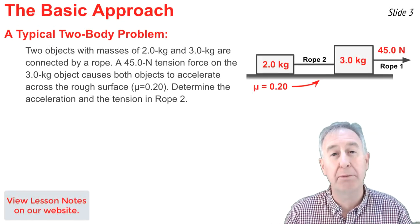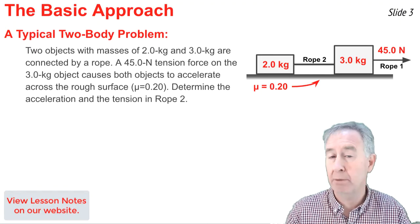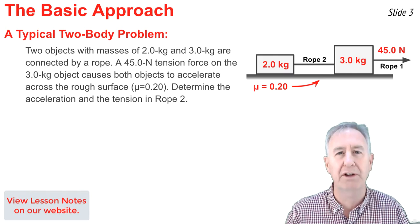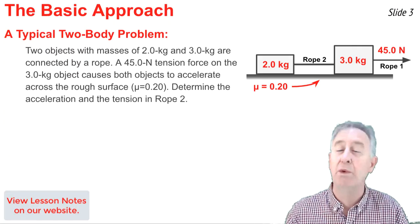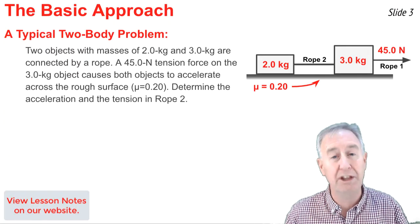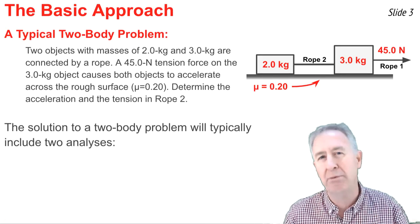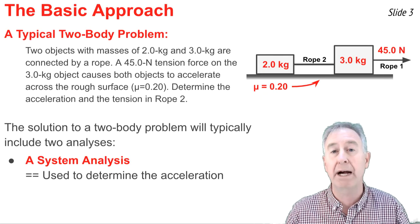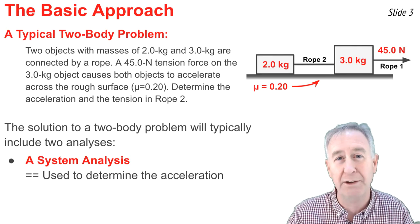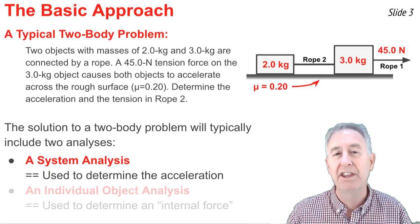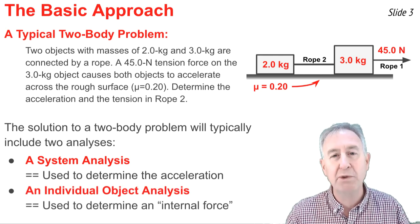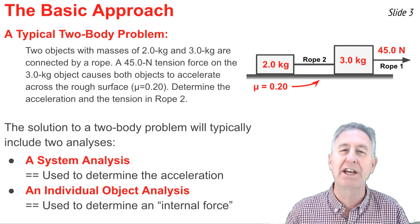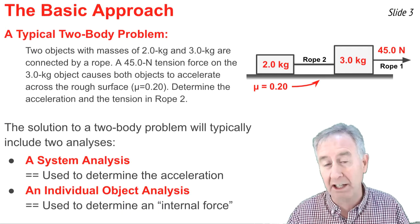A two-body problem involves two objects, usually connected by a rope or by touching one another, where a force on one object moves both objects together, usually with an acceleration. A typical two-body problem asks for two things: the acceleration of the objects and the force acting between them. The solution usually involves two separate analyses. In the first — the system analysis — we treat the two objects as one and investigate forces acting from outside the system to accelerate it, typically to find acceleration. The second is the individual object analysis, where we isolate one object, examine the forces on it, and do an F-net equals MA analysis to determine the internal force acting between the objects.